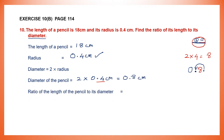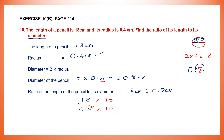Now I can find the ratio of the length of the pencil to its diameter. The length of the pencil is 18 cm and the diameter of the pencil is 0.8 cm. Let me write this as a fraction: 18 by 0.8. Now the denominator is a decimal number — I'm going to make it a whole number, making it 8. For that, I need to multiply by 10. If I multiply the denominator by 10, I must multiply the numerator also by 10. So 18 into 10 is 180, and 0.8 into 10 is simply 8. So now I've got 180 by 8.